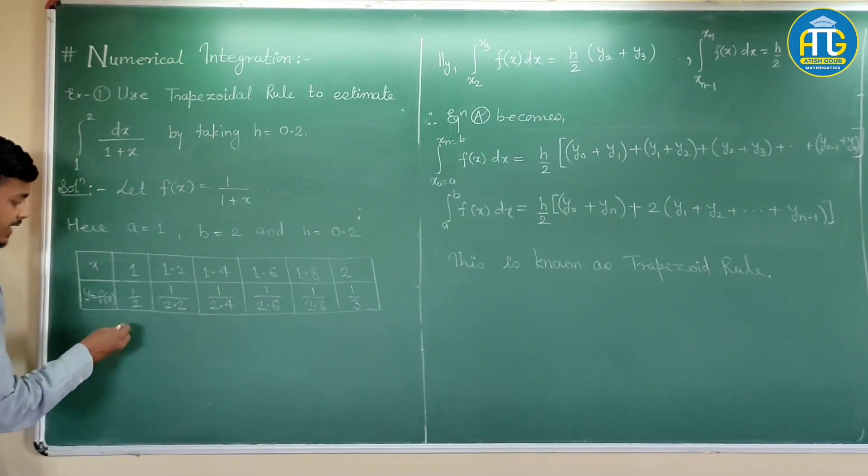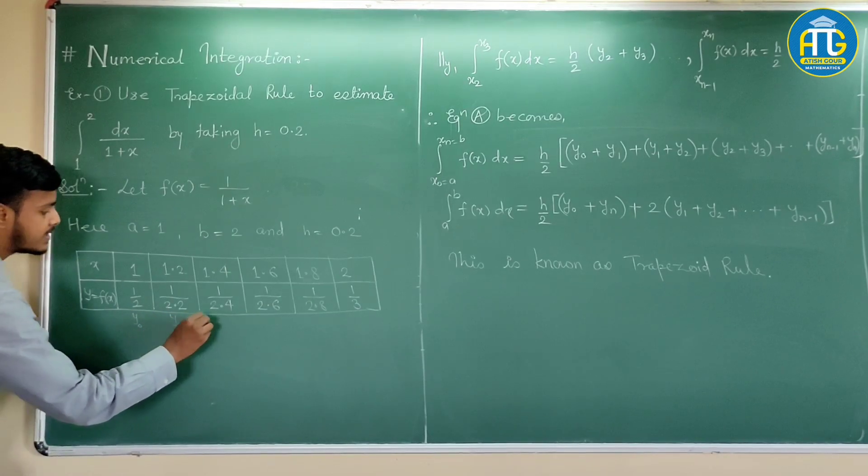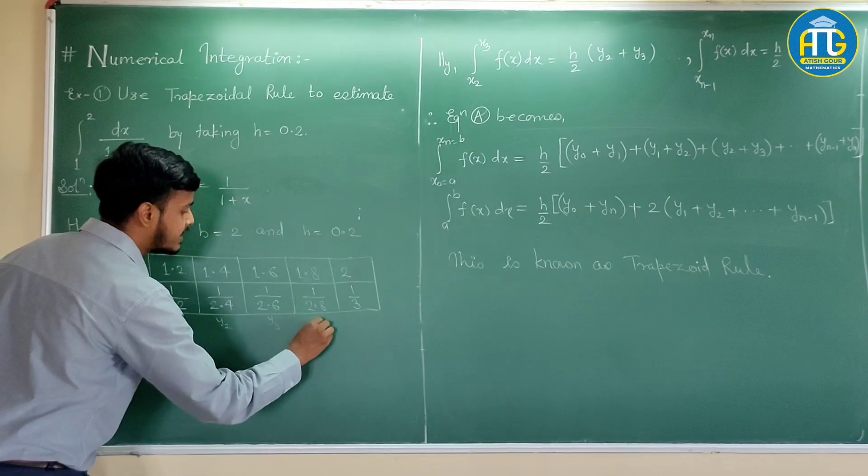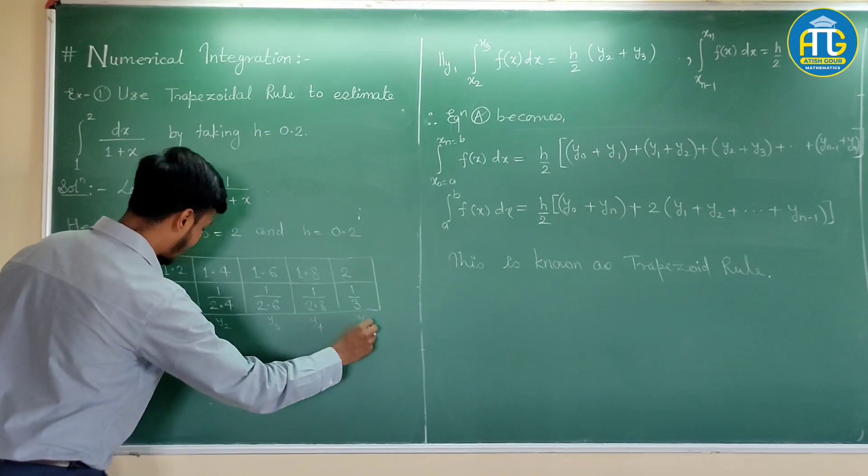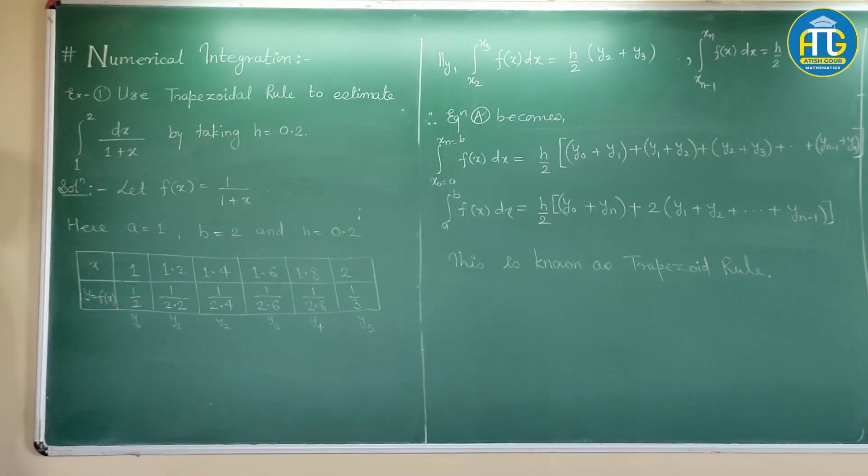Now, we got all these values. Next, you have to do the naming. That is this is y0, this is y1, this is y2, this is y3, this is y4 and this is yn. Here, yn is equal to 5.